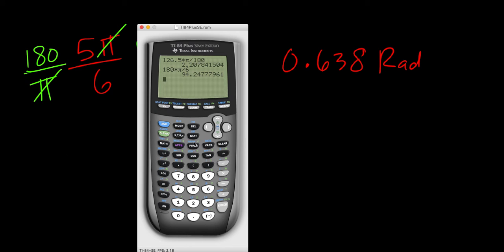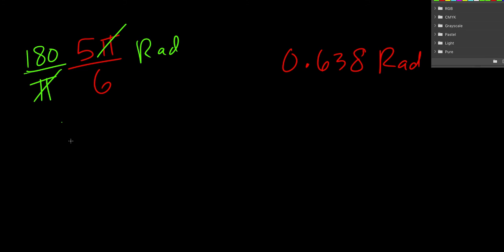And I did the wrong multiplication, that's why I got the wrong answer. Okay, sorry, so it's 180 times 5 divided by 6. Alright, so 150. So 150 degrees. Okay, once again, 5π/6 radians is the same thing as 150 degrees.